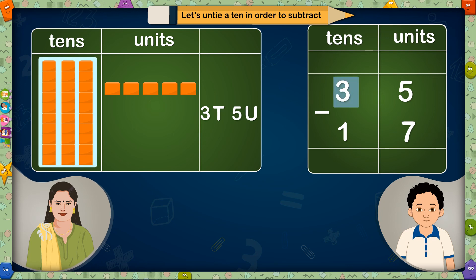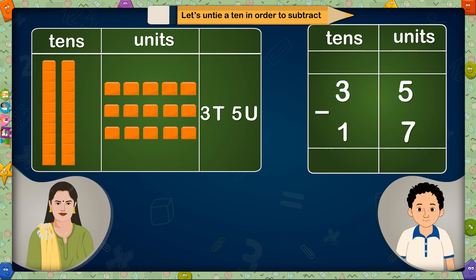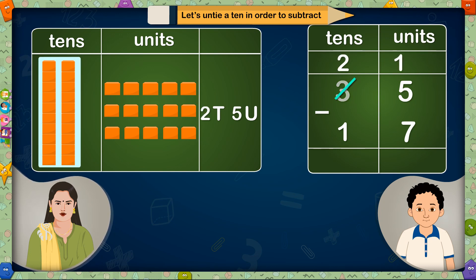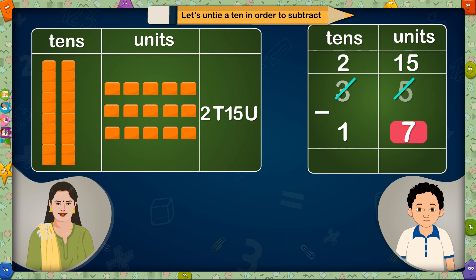See, there are altogether 3 tens. We will borrow 1 ten in the units place. So only 2 tens will be left over here. And here we get 10 units by untying a ten, plus 5 units, which will together make 15 units. If we reduce 7 units from 15 units, 8 units will be left.